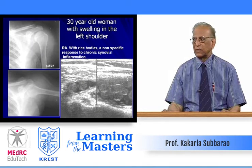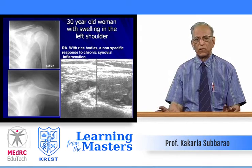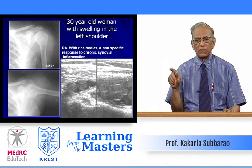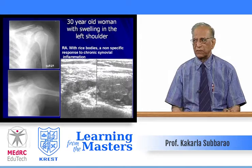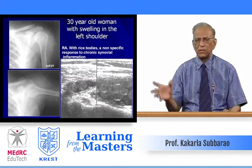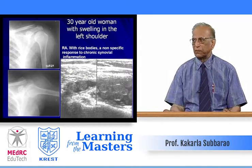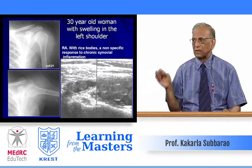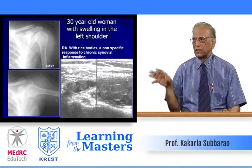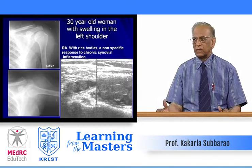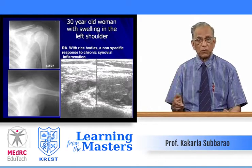On the left-hand side, a 30-year-old woman presented with swelling in the left shoulder. On the plain film, all you see is soft tissue swelling around the head and neck of the humerus — no bone erosions, no lytic areas, no calcification. On the right-hand lower side in ultrasound, you could see multiple echogenic loose bodies — a non-specific response to chronic synovial inflammation. These are called rice bodies, but they can also be seen in tuberculosis.